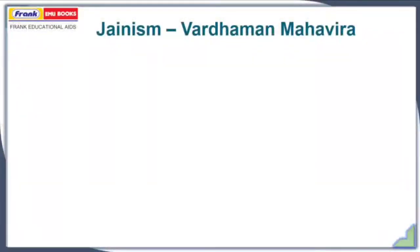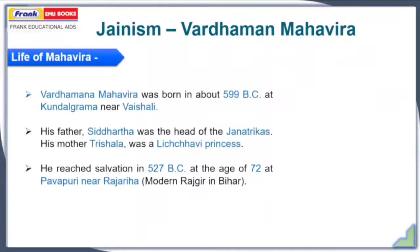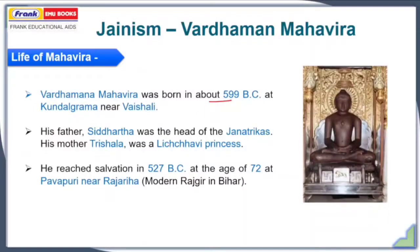We will start our discussion with Jainism. When it comes to Jainism, we cannot escape Lord Mahavira — Vardaman Mahavira. Lord Mahavira was born in about 599 BC at Kundalgram near Vaishali. His father, Siddhartha, was the head of the Jantrika clan — an oligarchy in Bihar — and his mother, Trishala, was a Lichvi princess. So he came from a royal, aristocratic family. He reached salvation in 527 BC at the age of 72 in Pavapuri near Rajgiri. That is why Pavapuri is one of the most important pilgrimages for the followers of Jainism.